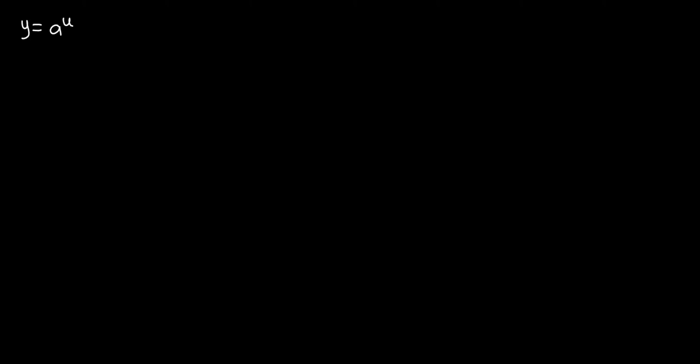Let's have a function y equals a to the power u, where a is greater than zero, and u can be a function or just a variable. The derivative of this function, y', will be equal to a to the power u, multiplied by ln of a, multiplied by u', which is the first derivative of u.